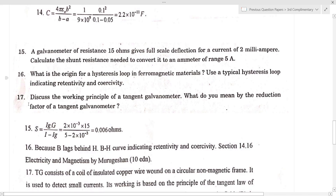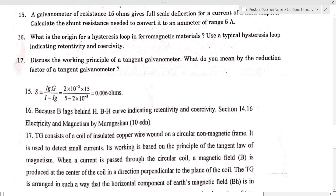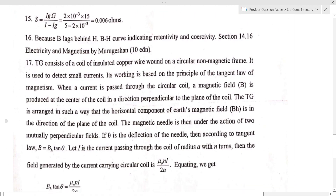Discuss the working principle of a tangent galvanometer. What do you mean by the reduction factor of TG? TG consists of a coil of insulated copper wire wound on a circular non-magnetic frame. It is used to detect small currents. Its working is based on the tangent law of magnetism: B is equal to BH tan theta. When a current is passed through a circular coil, a magnetic field B is produced at the center, perpendicular to the plane of the coil.